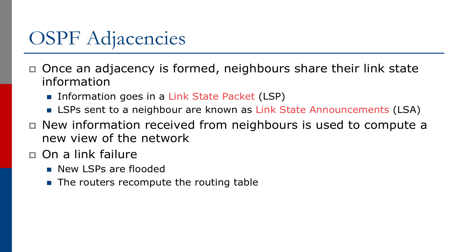Once the adjacency is formed, neighbors share the link state information. Information goes into a link state packet, or LSP. LSPs are sent to a neighbor, and these are known as link state announcements, or LSAs. New information received from neighbors is used to compute a new view of the network. New LSPs are flooded, and the routers recompute the routing table.